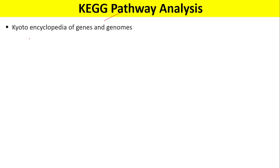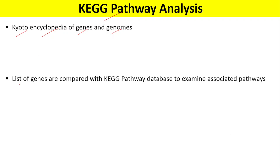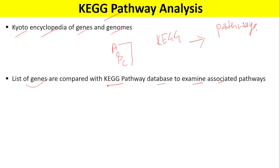What is KEGG pathway analysis? KEGG stands for Kyoto Encyclopedia of Genes and Genomes. In KEGG pathway analysis, we compare a list of genes with the KEGG pathway database to examine associated pathways. So basically, we have a list of genes and we compare this list with the KEGG database to find out what pathways are associated with that list of genes.